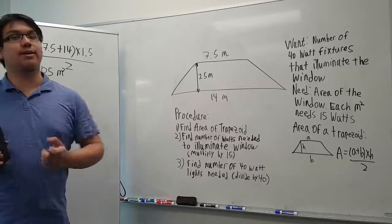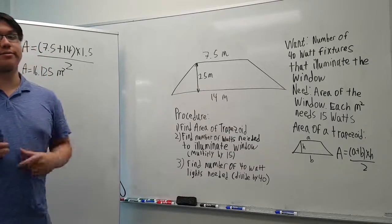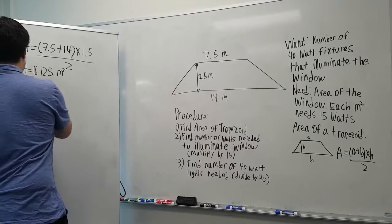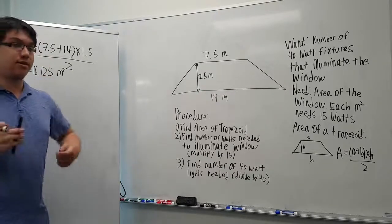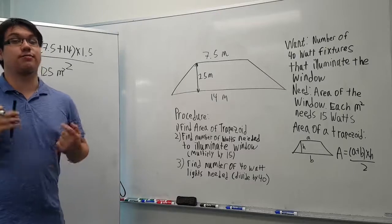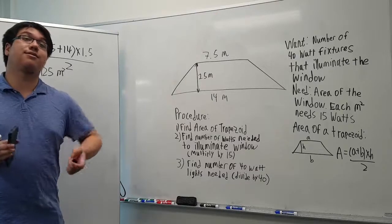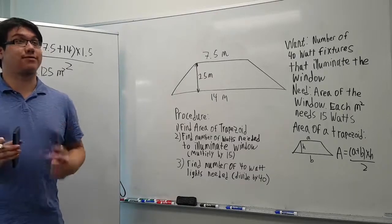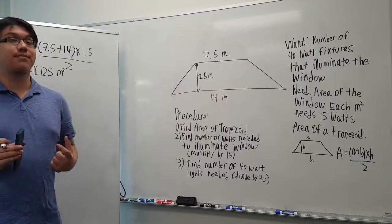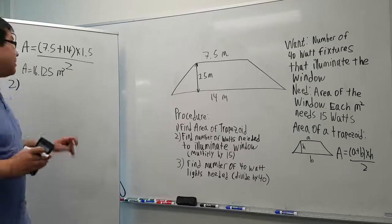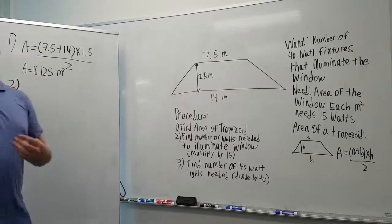Okay, next on to step 2. We want the number of watts needed to illuminate the window. This entails multiplying the area by 15 because we need 15 watts per square meter, and we're going to multiply that by the amount of square meters we actually have.